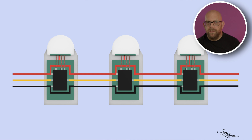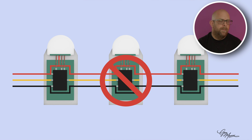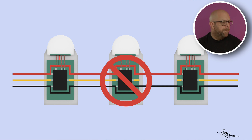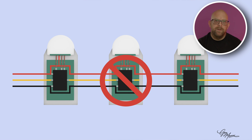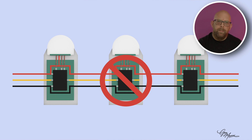Now our problem with these pixels comes if one of them dies. If the chip dies then that's the end of the game from there onwards. So your data is coming into the first pixel here, it runs across to the second one, and because this one has died it is not going to pass data on to the last pixel and subsequent pixels in the string. So you'll see your data runs good up to a point and then nothing after that.